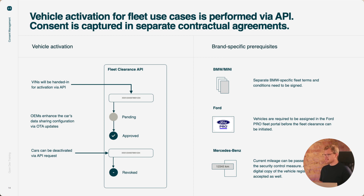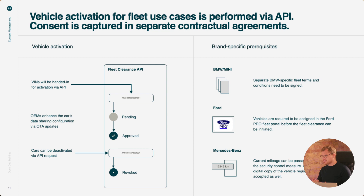The third exception is Mercedes-Benz, where there are two ways to authorize access. One is that you provide the current mileage of the vehicle and we will activate the car and verify it matches — we do allow for some deviation, especially if it takes a bit of time for the activation to go through. If you don't have the mileage at hand, you can send in a digital copy of the vehicle registration papers or other documentation proving the vehicle belongs to you. Once that is done, these vehicles can also be activated.